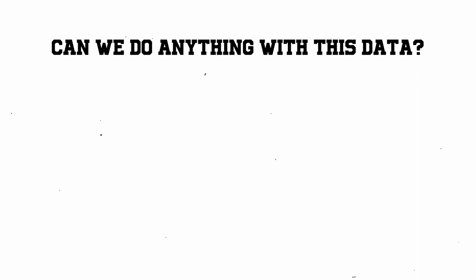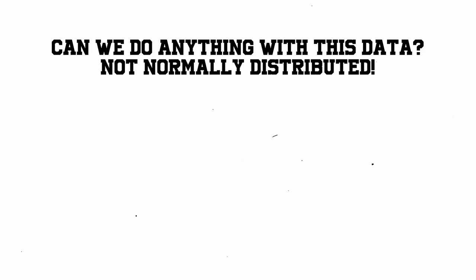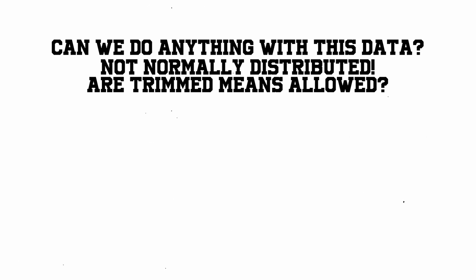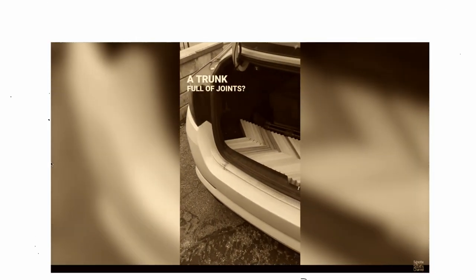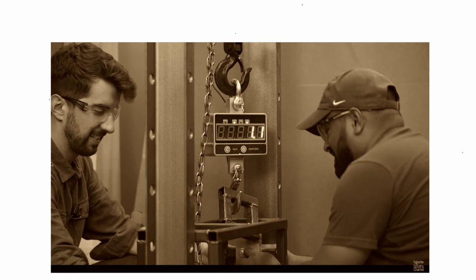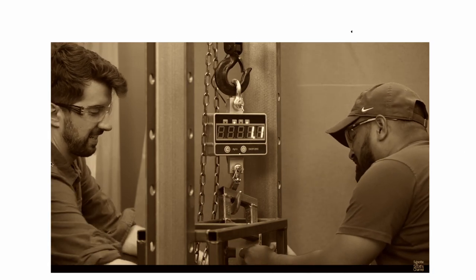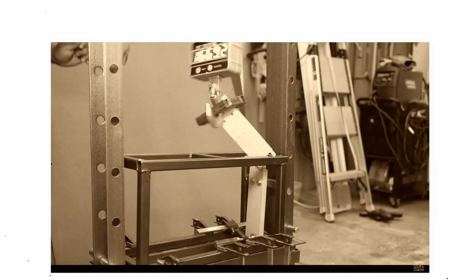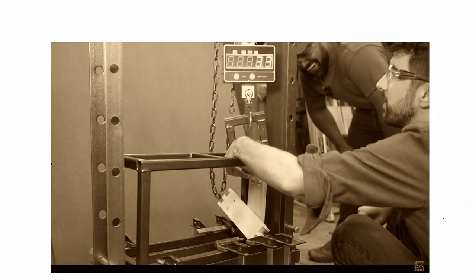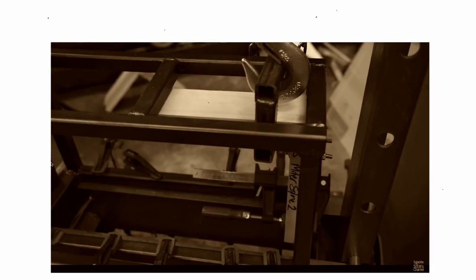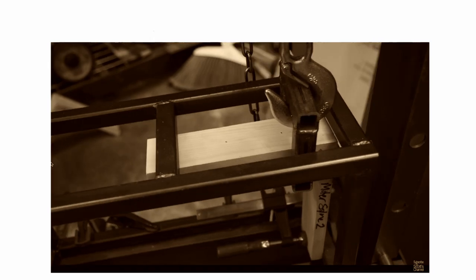Can we take the data at face value, or should we discard it because it doesn't adhere to a normal distribution? Was the use of a trimmed mean correct? These questions will be the focus of this video. Before we delve into statistical analysis, let me provide some background on the test. Scott Walsh conducted various joint strength tests using a machine to pull apart joints. The metric was simple: how much force does it take to break a joint? He used five samples per joint and calculated the average after removing the minimum and maximum values.